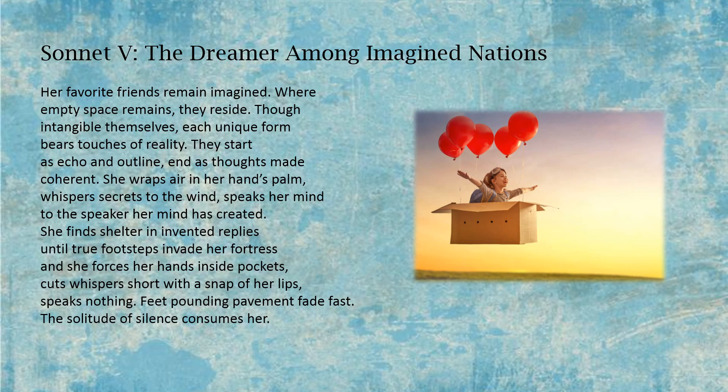Sonnet five: The Dreamer Among Imagined Nations. Her favorite friends remained imagined. Where empty space remains, they reside. Though intangible themselves, each unique form bears touches of reality. They start as echo and outline, end as thoughts made coherent. She wraps the air in her hand's palm, whispers secrets to the wind, speaks her mind to the speaker her mind has created. She finds shelter in invented replies, until true footsteps invade her fortress, and she forces her hands inside pockets, cuts whispers short with a snap of her lips, speaks nothing. Feet pounding pavement fade fast. The solitude of silence consumes her.